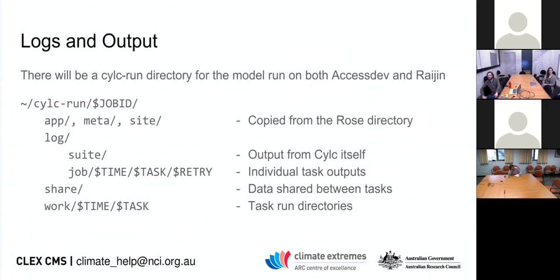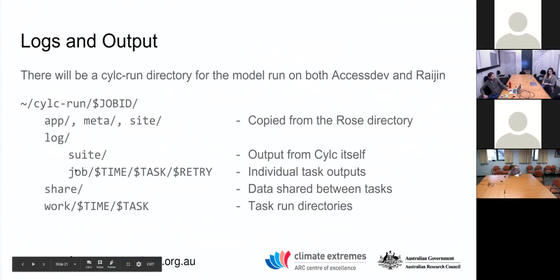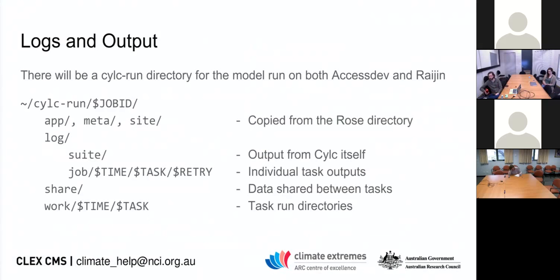Cylc writes to a separate directory from the Rose directory where you set up the configuration. By default it sets outputs to '~/cylc-run'. Depending on whether the task gets run on access-dev or on Raijin for actually running the model, you'll find it on either of those computers. You can drill down and find the logs of individual tasks as well as their work directories.